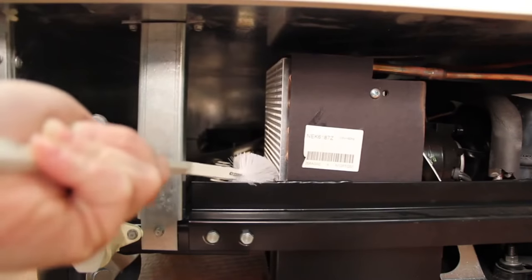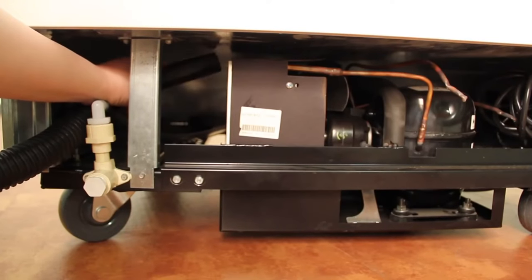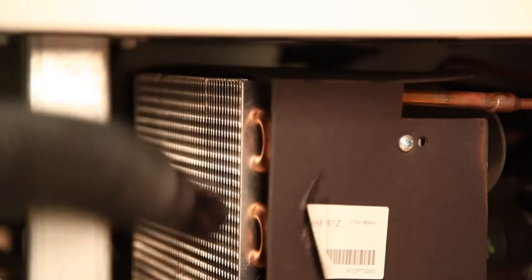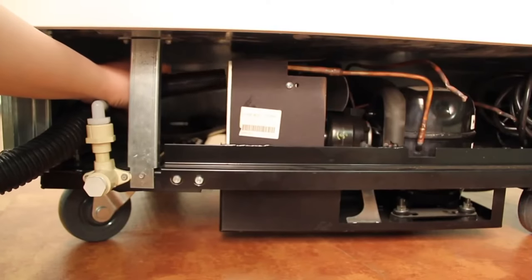After brushing the condenser coil, vacuum the dirt from the coil. Again, moving the vacuum up and down the coil and never side to side as this could bend the fins on the coil.